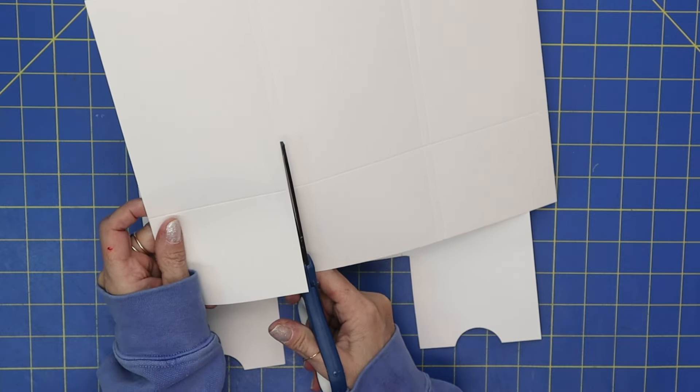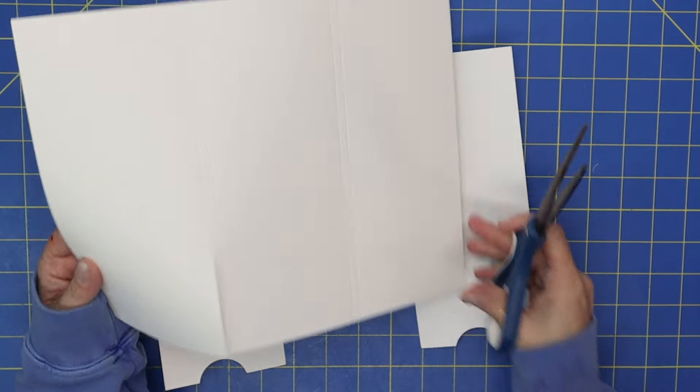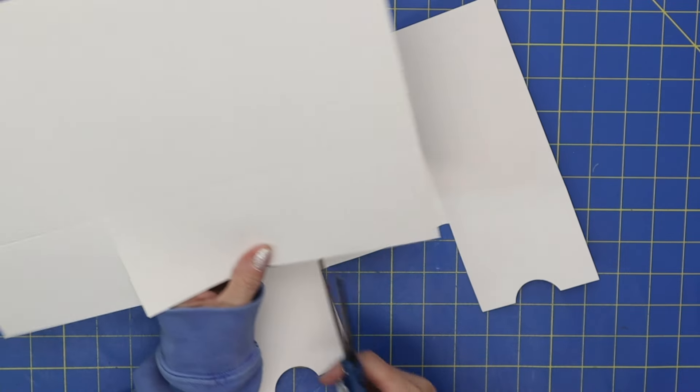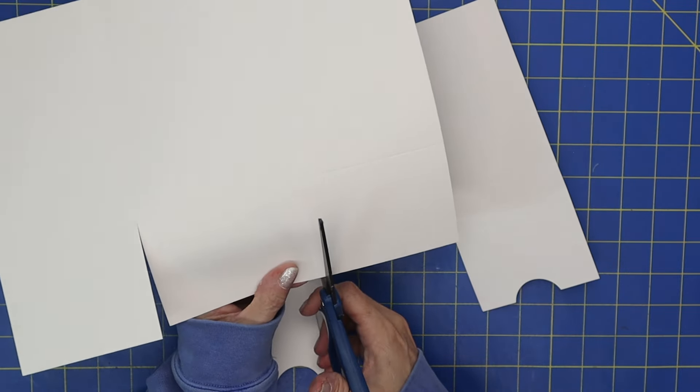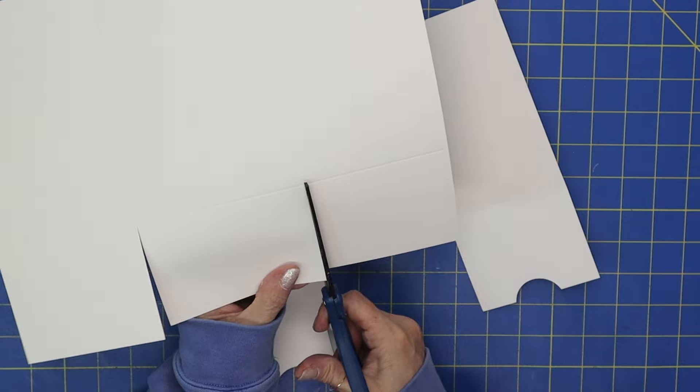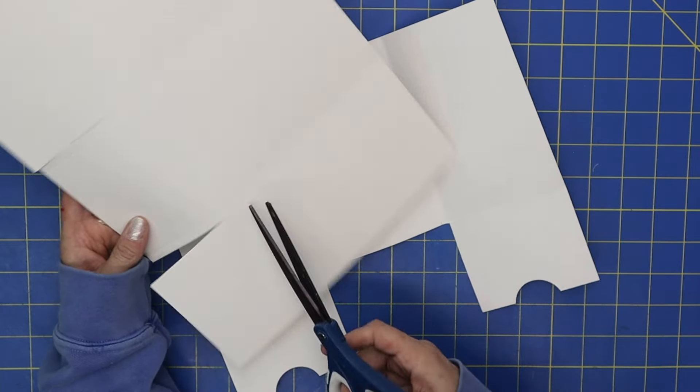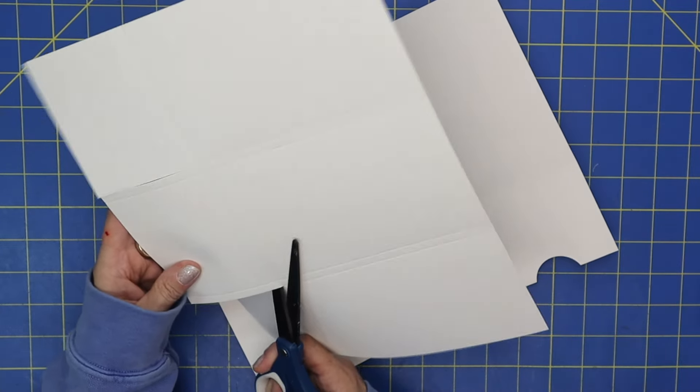Just up to that 6-inch score line right there. And come over to this side and you want to cut up the outer score lines just to the score line, and then we just want to cut out this little rectangle.